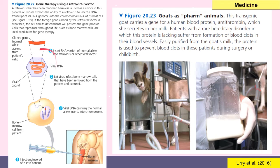Transgenic goats are also being used in medicine. This transgenic goat carries a gene for human blood protein antithrombin, which the goat secretes in her milk. Patients with a rare hereditary condition lack this protein and suffer from formation of blood clots in their blood vessels. The antithrombin protein, easily purified from the goat's milk, is used to prevent blood clots in those patients — particularly during surgery or childbirth, potentially saving their lives.